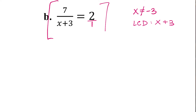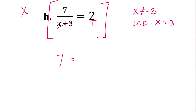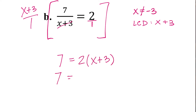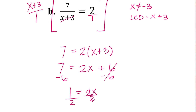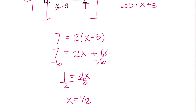So if we take this whole equation and multiply it by x plus 3, when we multiply 7 over x plus 3 by x plus 3, those x plus 3's will cancel and we just get 7. And then if we multiply x plus 3 by 2 over 1, nothing cancels, so we have 2 times x plus 3. So this is 7 equals 2x plus 6. Getting x by itself, we'll subtract 6 over — that's 1 equals 2x — so dividing by 2, we get x equals 1 half. That was not our restriction, so that is the answer.